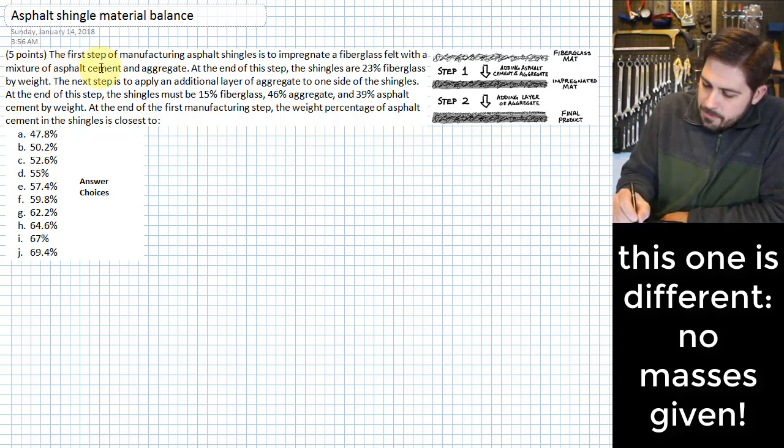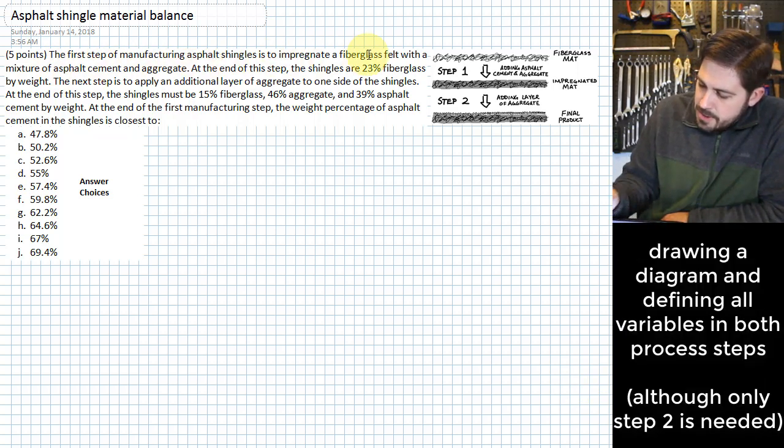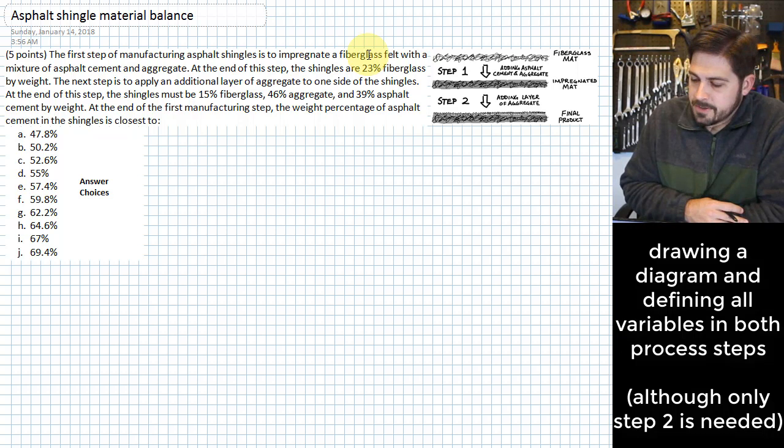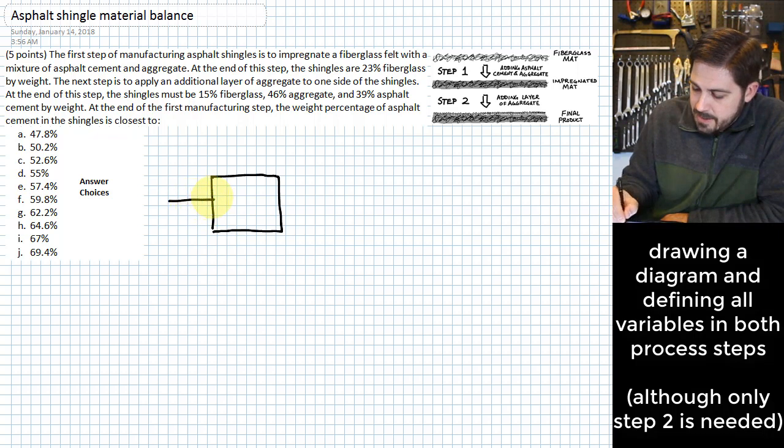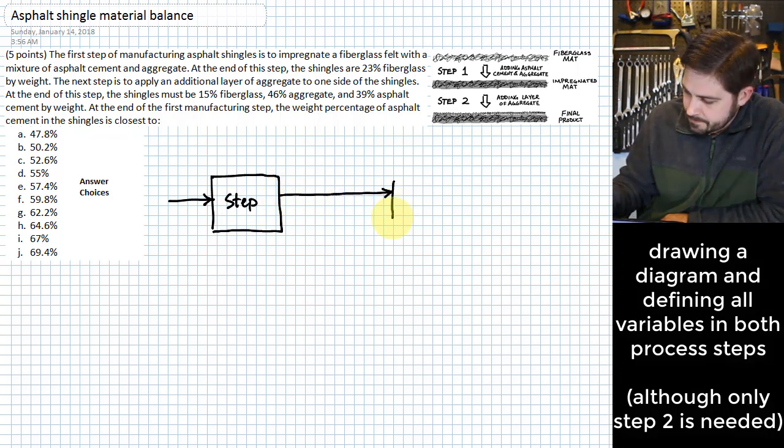So here it is. The first step of manufacturing asphalt shingles is to impregnate a fiberglass felt with a mixture of asphalt cement and aggregate. I'm just going to go ahead and start making a little diagram here. What we're saying here is that we basically have an input stream into our first step of the process. And from there it goes into the next step of the process.